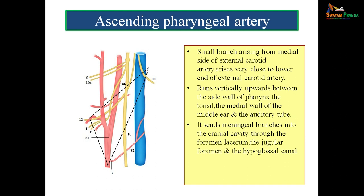The ascending pharyngeal artery is a small branch arising from the medial side of the external carotid and is actually the first artery to arise from it, though it is not shown in the figure. It runs vertically upwards between the side wall of the pharynx, the tonsil, the medial wall of the middle ear, and the auditory tube. It sends meningeal branches into the cranial cavity through the foramen lacerum, the jugular foramen, and the hypoglossal canal. It is the only medial branch of the external carotid artery.